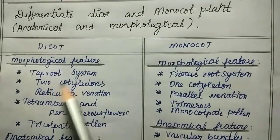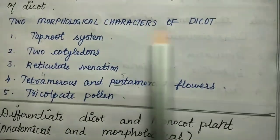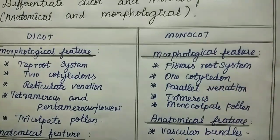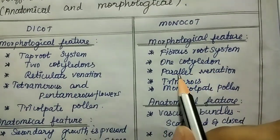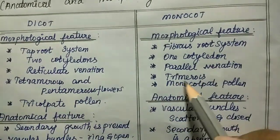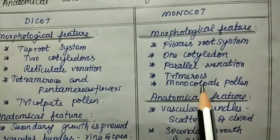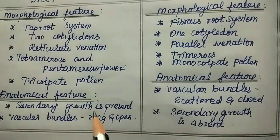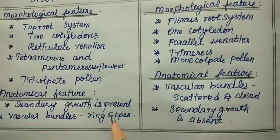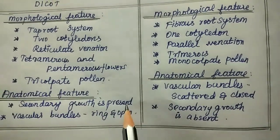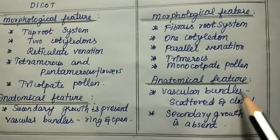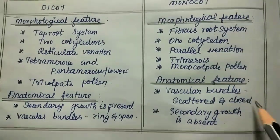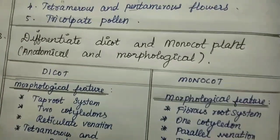Third question: differentiate dicot and monocot plants. Morphological features: dicots have a taproot system, two cotyledons, reticulate venation, tetramerous or pentamerous flowers, and tricolpate pollen. Monocots have a fibrous root system, one cotyledon, parallel venation, trimerous flowers, and monocolpate pollen. Anatomical features: dicots have secondary growth present, open vascular bundles arranged in a ring. Monocots have secondary growth absent, closed vascular bundles scattered.